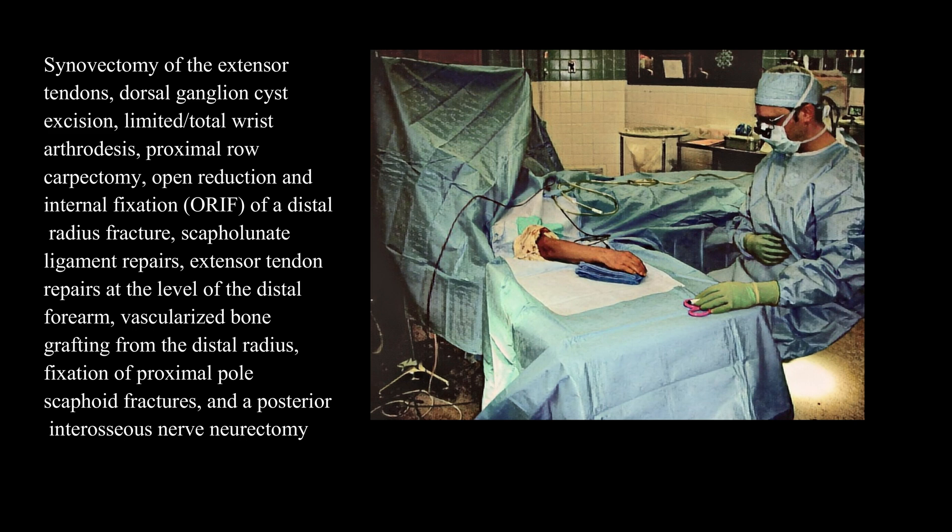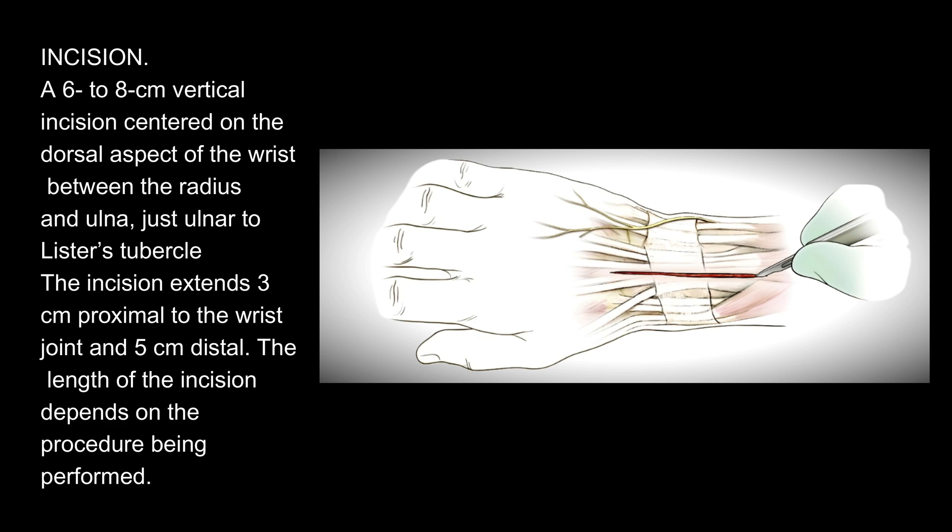ORIF of a distal radius fracture, scapholunate ligament repairs, extensor tendon repairs at the level of the distal forearm, vascularized bone grafting from the distal radius, fixation of proximal pole scaphoid fractures, and a posterior interosseous nerve neurectomy. The length of the incision depends on the procedure being performed.